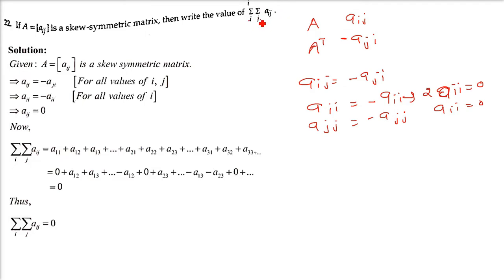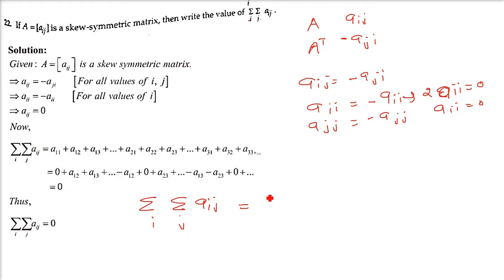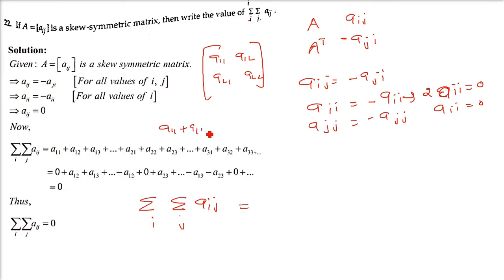For the full sum Σij Aij, i and j can be any values, so we consider all elements. For a 2 by 2 matrix this is A11 + A12 + A21 + A22, and the pattern extends for n by n matrices.